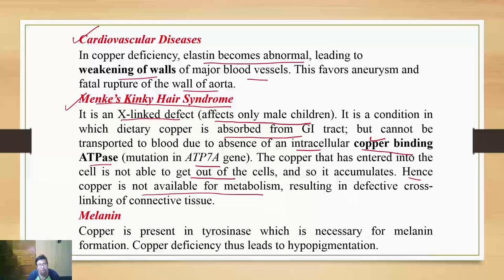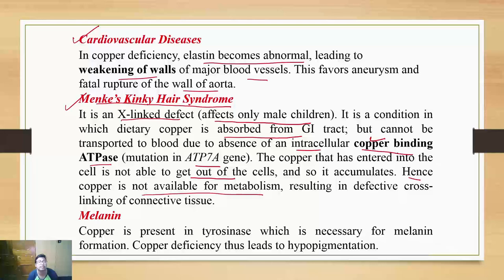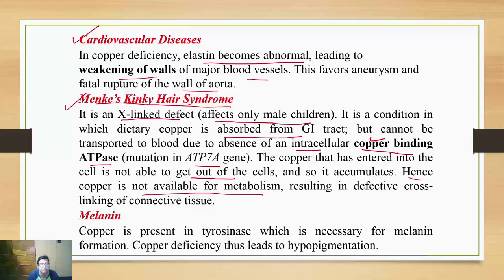Often both ATP7A and ATP7B are problematic simultaneously. Menkes Kinky Hair Syndrome is not a life-threatening disorder, but Wilson's disease is. Mutation of ATP7A is milder compared to the disease in which ATP7B is mutated. If asked to name two diseases, mention Wilson's disease and Menkes Kinky Hair Syndrome, and if asked about the genetic defect, mention ATP7A and ATP7B — this will make a very good impression on the examiner.